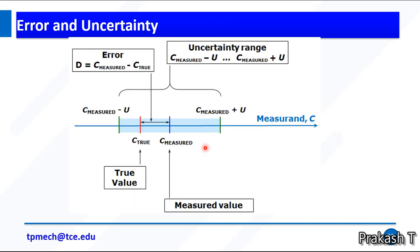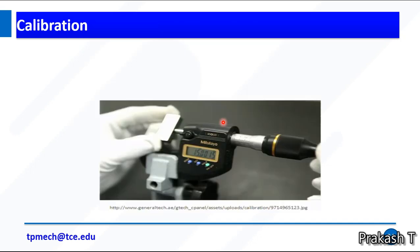This graph shows the comparison, the relation between error and uncertainty. We know that error is the difference between true value minus measured value. If I said that I have a range, C measured minus U plus C measured plus U, these are the range. So uncertainty range comes with C measured minus U to C measured plus U.